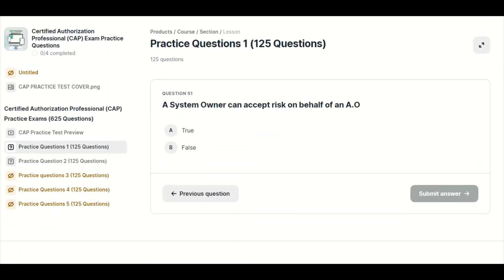A system owner can accept risk on behalf of an AO. Is this true or false? False. Only the AO can accept risk for the organization.